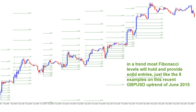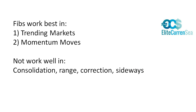We need a trend or momentum — momentum is just as valid. Not only is a trend important, but strong price movement in one direction is also an environment where price respects the Fibonacci level. To summarize: fibs work best in trending markets and momentum moves, and not well in ranges.